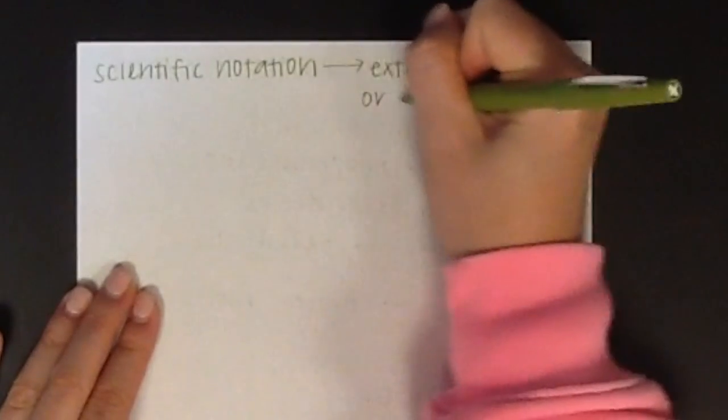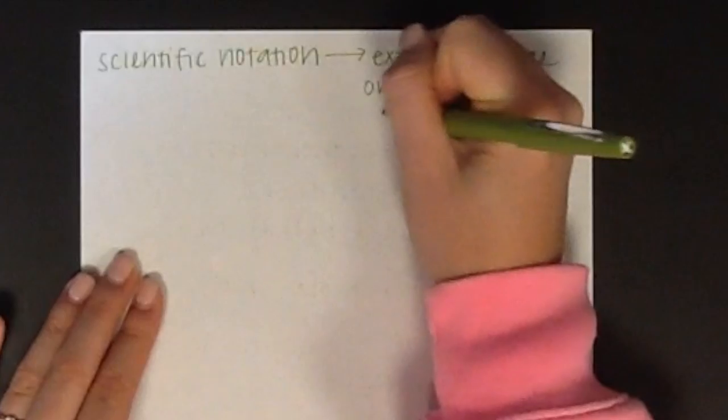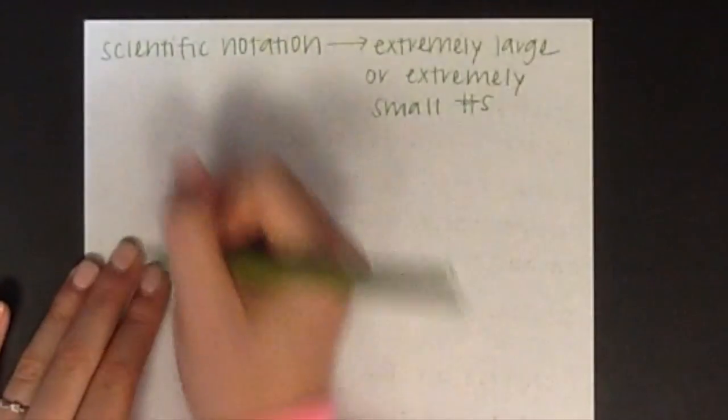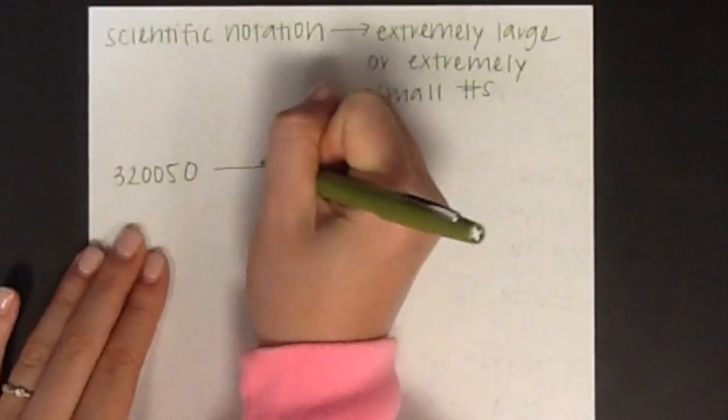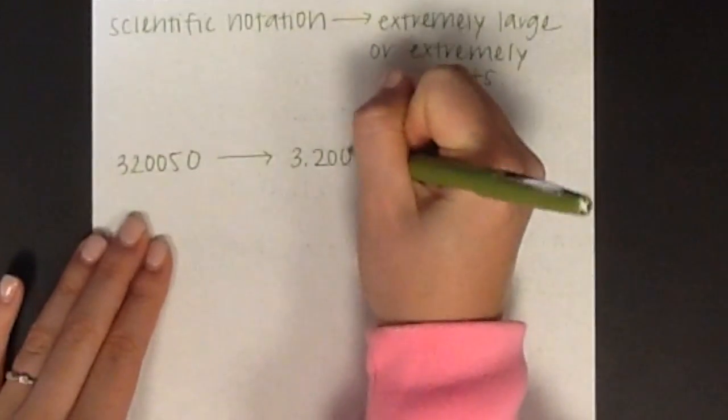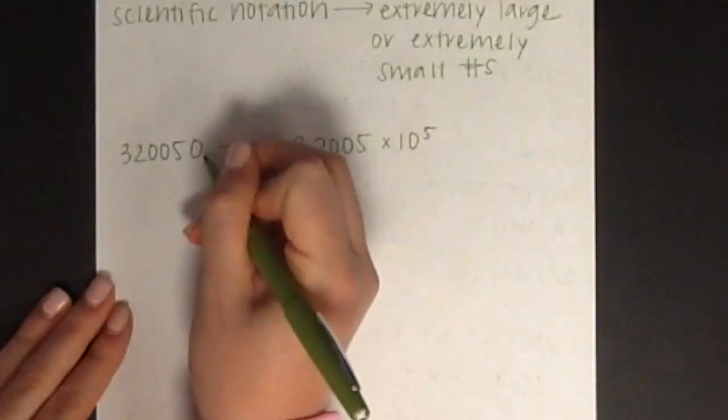This number converted to scientific notation is 3.2005 times 10 to the 5th. The 5th exponent is obtained because when you start from the very right of the last number and work your way left until you are in between the first and second number, you have moved five decimal places. In the original number, there are four significant digits, so you should end with four significant digits.